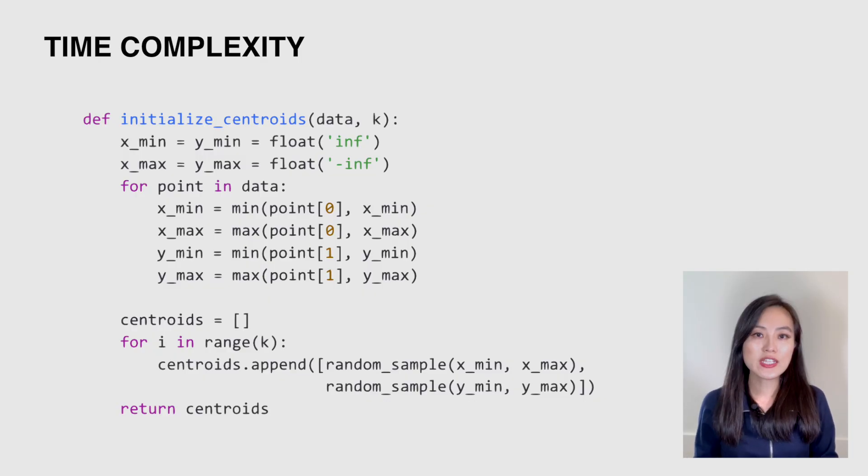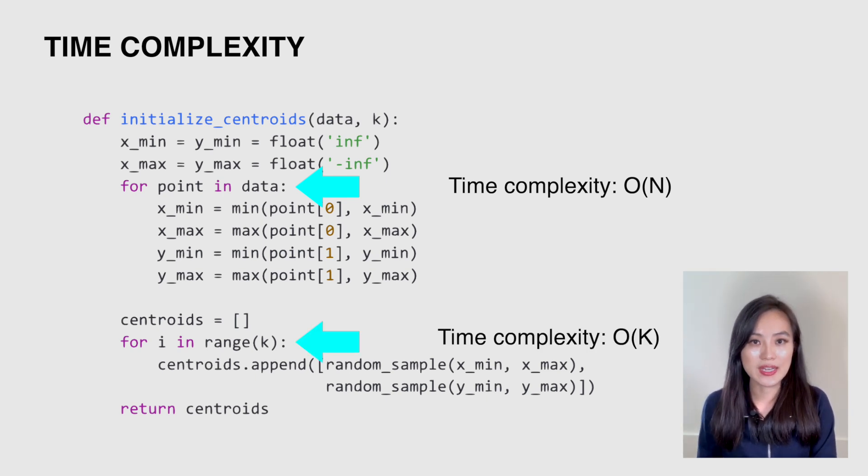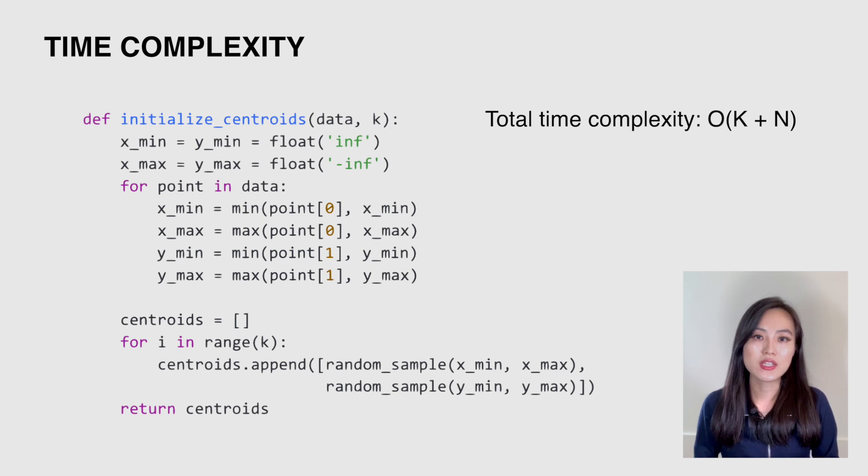The initialization of the centroids loops through all the data points and all the centroids once. The former has O(n) complexity and the latter has O(k) complexity. So the total complexity is O(k + n). Because k is a number much smaller than n, we could say the complexity is O(n).